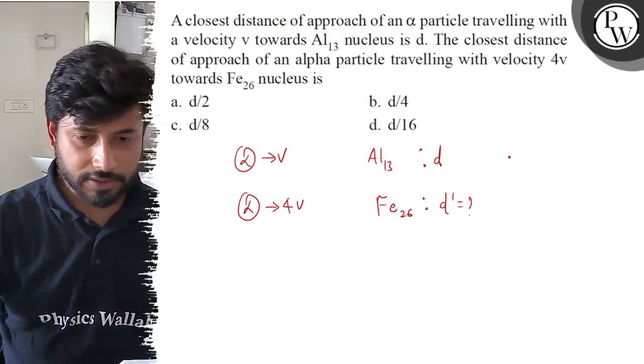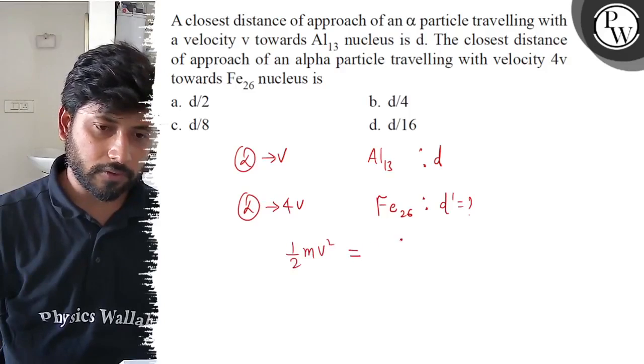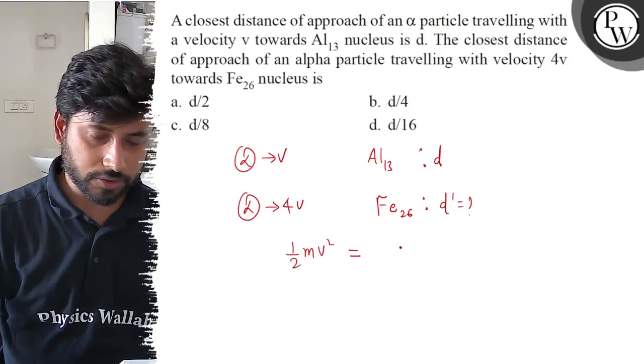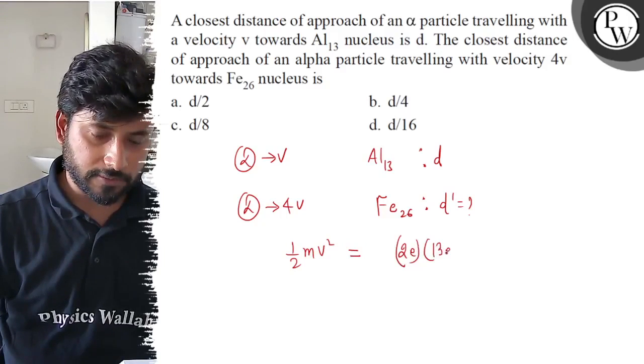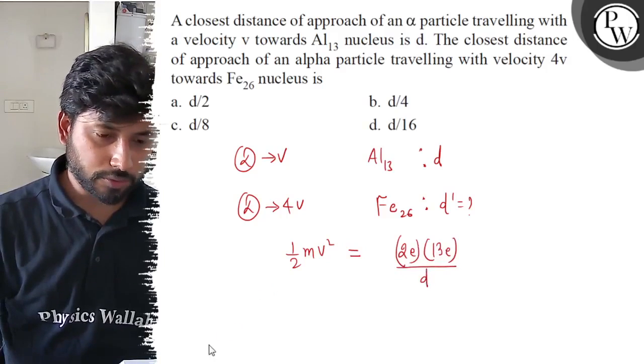Initially the kinetic energy is half mV² and the distance of closest approach will be Q1 Q2, where Q1 is 2e and Q2 is 13e, upon distance of closest approach D.